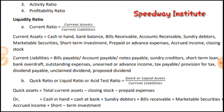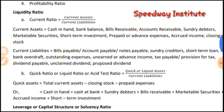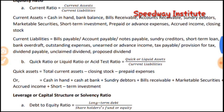Current liabilities include: bills payable, accounts payable, notes payable, sundry creditors, short-term loan, bank overdraft, outstanding expenses, earned or advanced income, tax payable or provision for tax, dividend payable, unclaimed dividend, and proposed dividend.